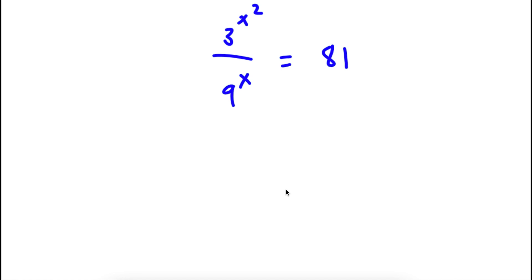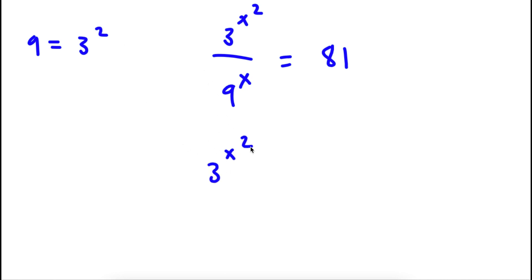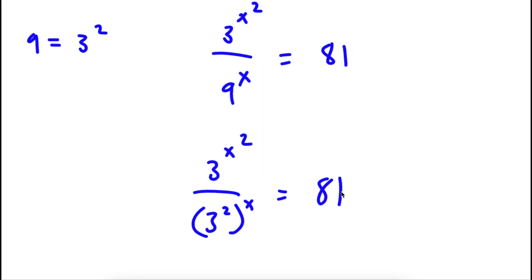Now, first off, 9 here is equal to 3 to the power of 2. So if I replace 9 with 3 to the power of 2, I get 3 to the power of x squared over 3 to the power of 2 to the power of x is equal to 81.